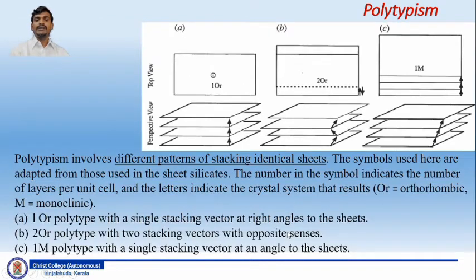Polytypism involves different patterns of stacking identical sheets. The symbols used here are adapted from those used in sheet silicates. The number in the symbol indicates the number of layers per unit cell. The letters indicate the crystal system that results. For example, OR is orthorhombic and M is monoclinic.